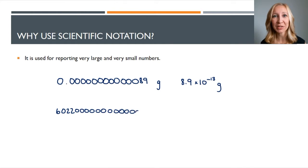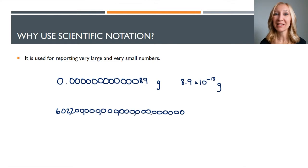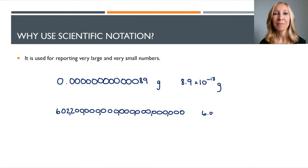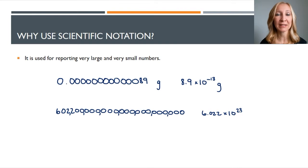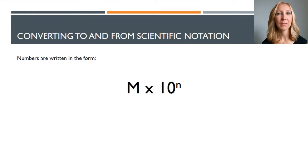Take this next number: six zero two two zero zero zero — lots and lots of zeros. This is the most commonly used number in chemistry; it represents the number of items in a mole. So you will be representing it a significant amount of times when you take a chemistry course. Instead of counting all those zeros, you write it as six point zero two two times ten to the twenty-third. You'll be less likely to make mistakes and more likely to save time.